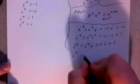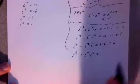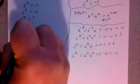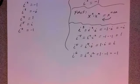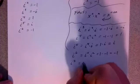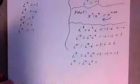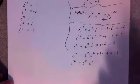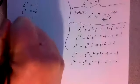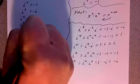i to the 6th: we're going to use i to the 4th times i squared. i to the 4th power is 1, i squared is negative 1, and 1 times negative 1 is negative 1. So i to the 6th power is negative 1. i to the 7th is i to the 4th times i to the 3rd, since 4 plus 3 is 7. That gives us 1 times i to the 3rd. i to the 3rd is negative i, so 1 times negative i is negative i. So i to the 7th power equals negative i.